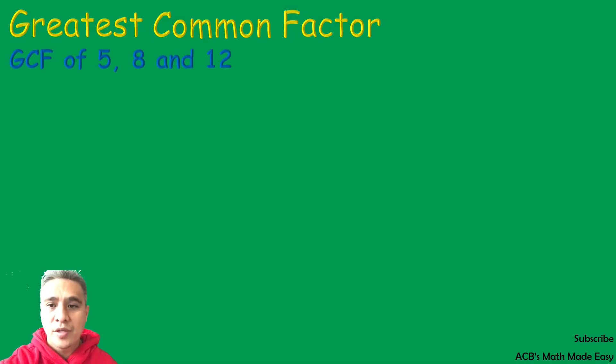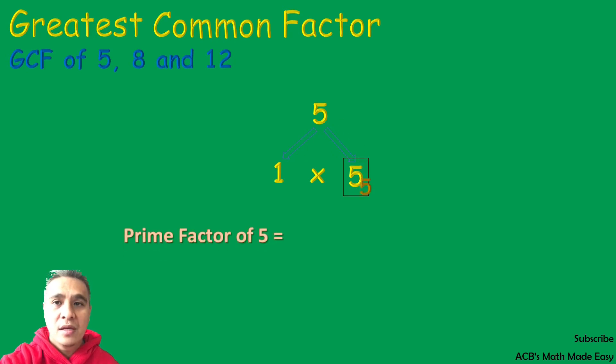We will try to get the GCF of 5, 8, and 12. 5 can be factored out by 1 times 5. The prime factors of 5 are 1 and 5, but you don't need to write 1 because 1 is a common factor of all numbers.